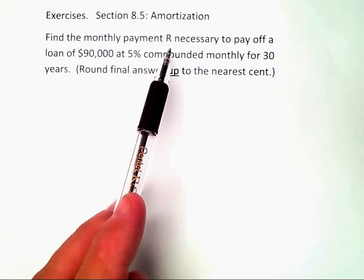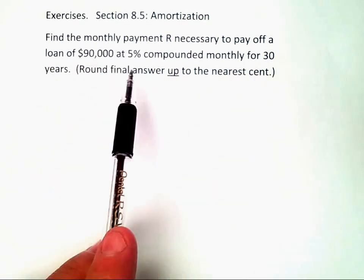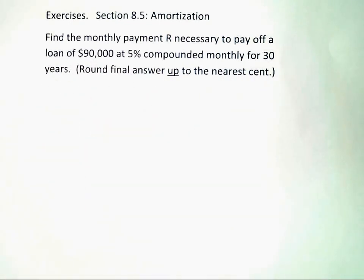This problem asks to find the monthly payment, capital R, necessary to pay off a loan of $90,000 at 5% compounded monthly for 30 years. We should round our final answer up to the nearest cent, and that's important.